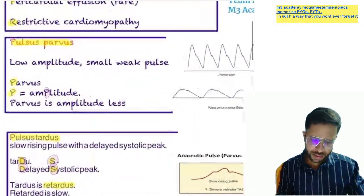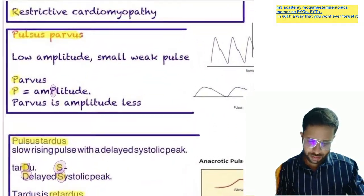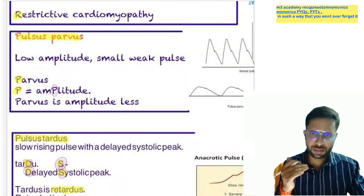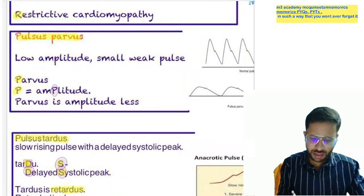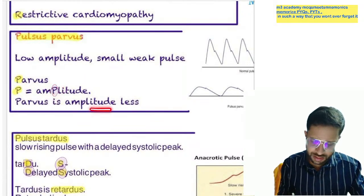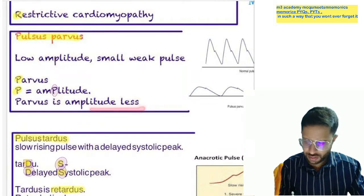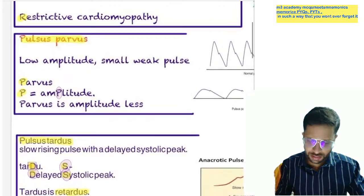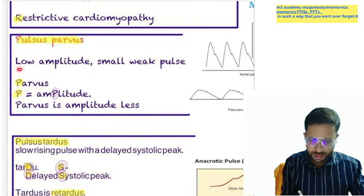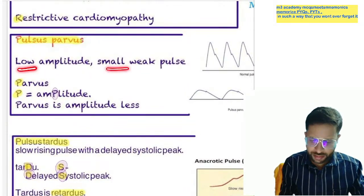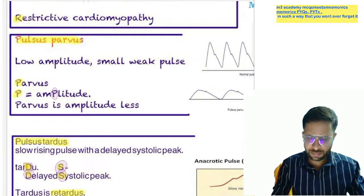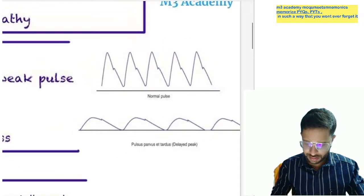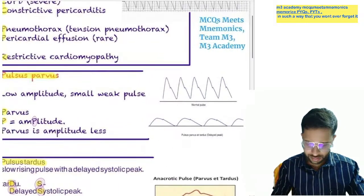Next is pulsus parvus. As the name suggests, parvus means amplitude is less — a low amplitude and small peak pulse. This is pulsus parvus.